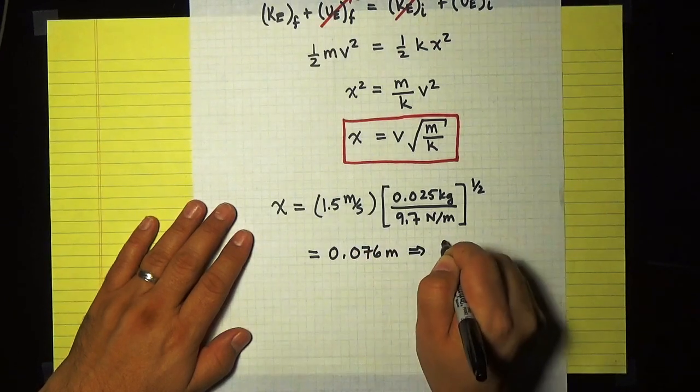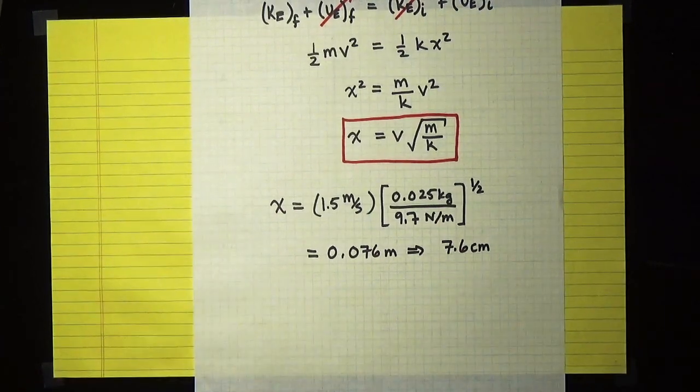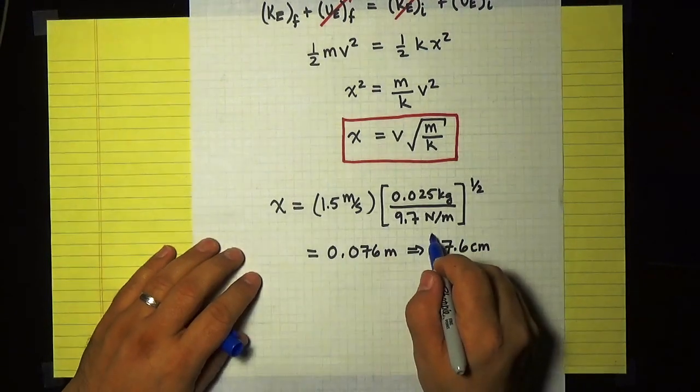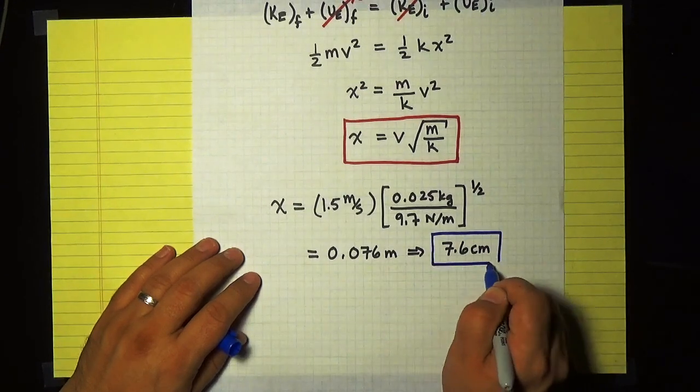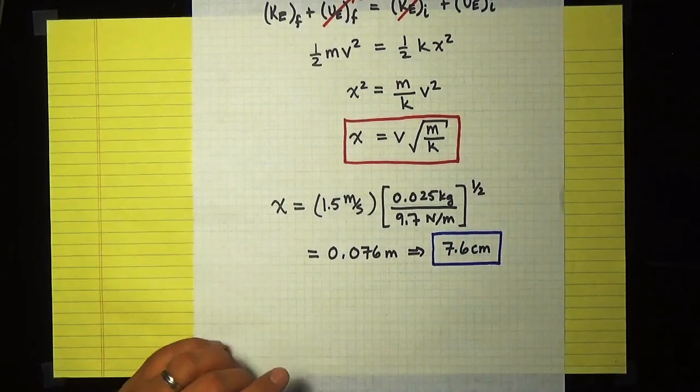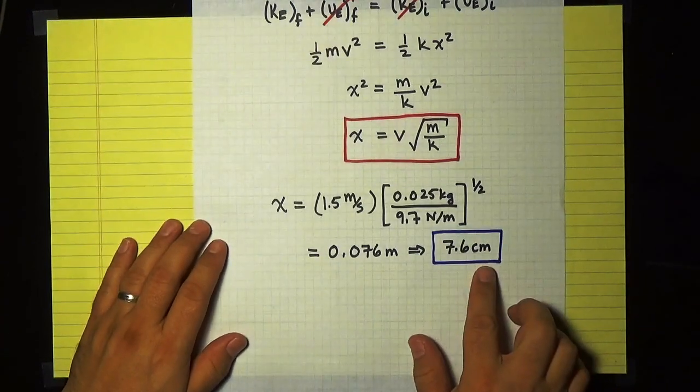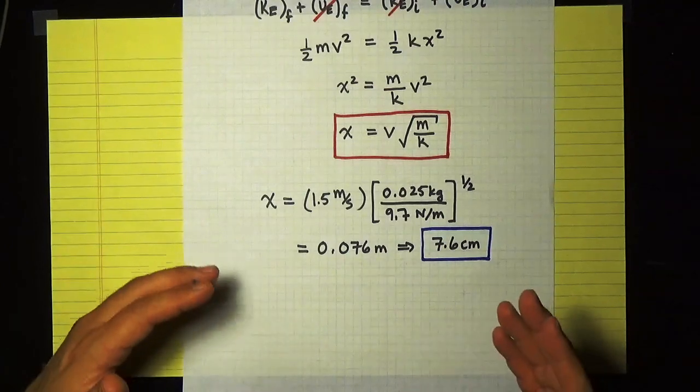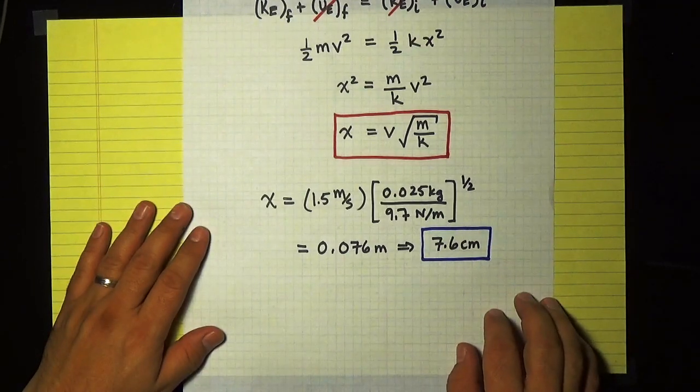And that is 7.6 centimeters. And I can imagine trying to understand whether or not that number is correct. It looks approximately correct to me because I know that 7.6 centimeters is a scale compatible with the size of the dart gun that I was talking about. So I can look at this number and at least have some sense that I did the calculation correctly.